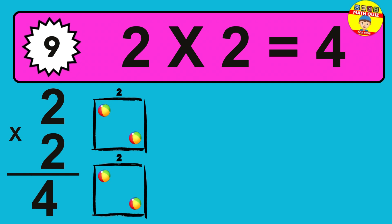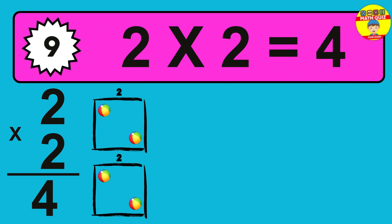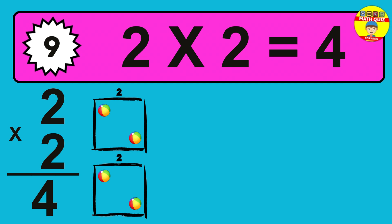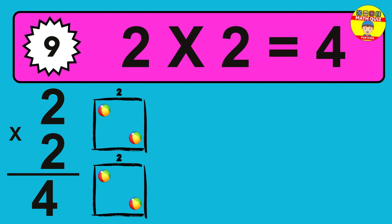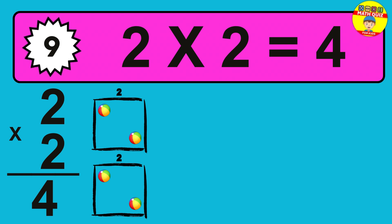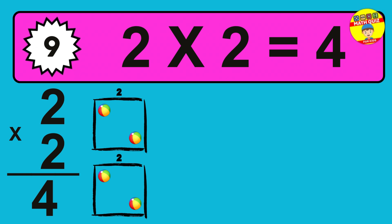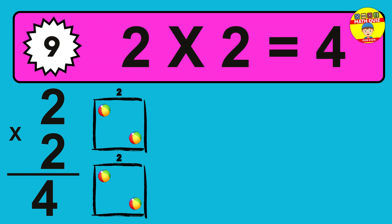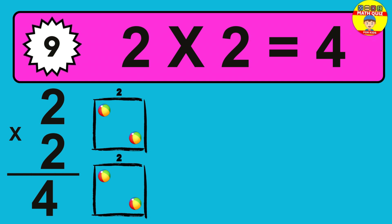Question 9. 2 times 2 equals what? So the answer is 2 times 2 is 4. To calculate, we have two groups with two balls each one. So how many balls do we have? 4 balls.